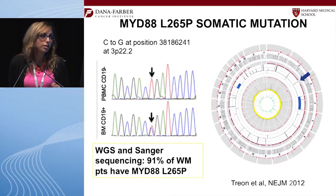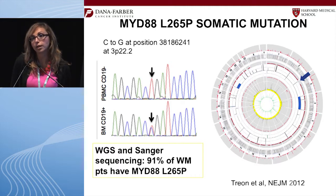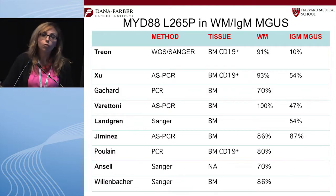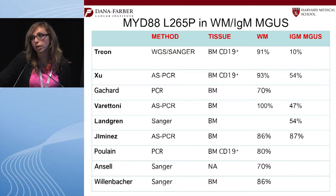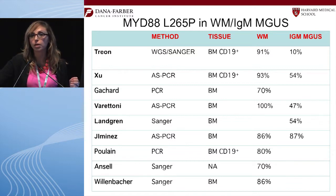The C-to-G change leads to a MYD88 L265P mutation, activating the ERK, PI3-kinase, and NF-κB pathways. Further studies by many groups confirmed the presence of MYD88 mutation in many patients with Waldenström — it is not present in myeloma or other B-cell malignancies, and it is also present in early disease in IgM MGUS, indicating that this mutation does not necessarily lead to proliferation or worse prognosis.